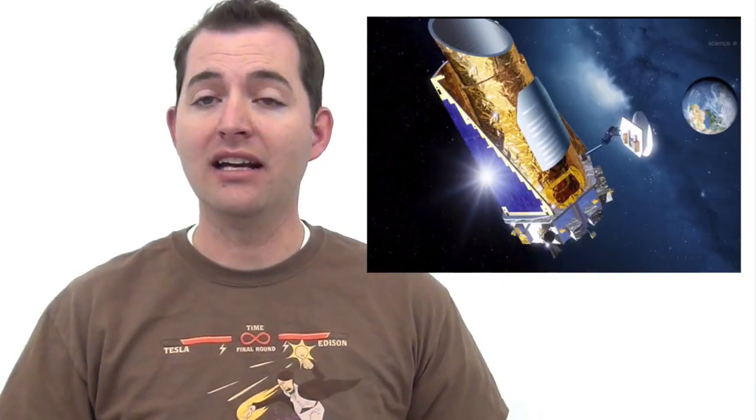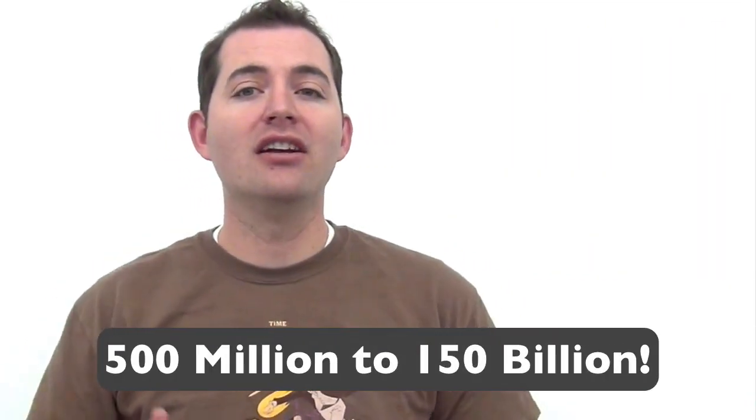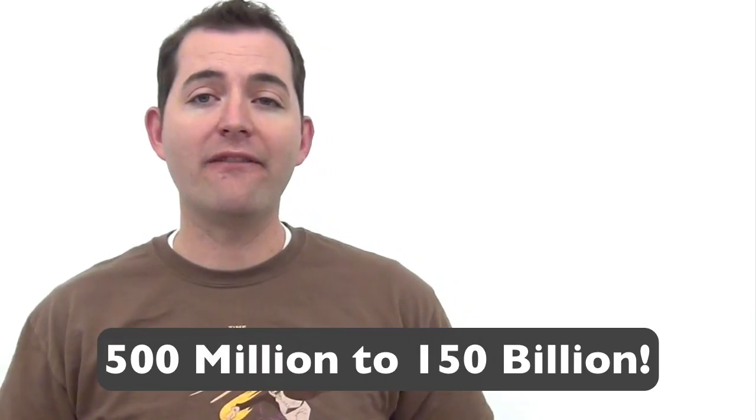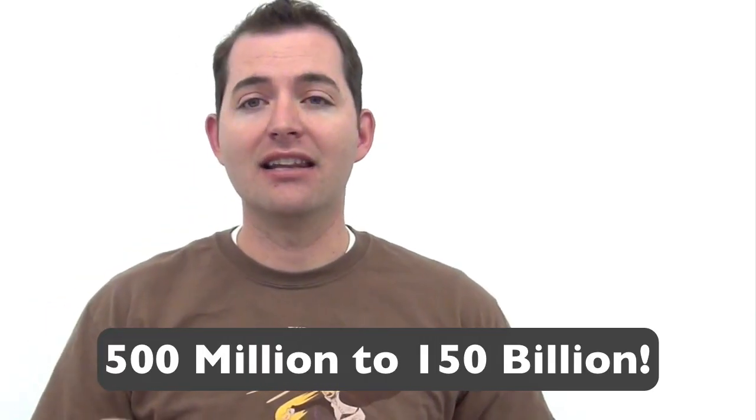Now scientists have done a lot of work looking for planets in habitable zones or Goldilocks zones around stars in our galaxy. In fact, it's estimated that somewhere between 50 to 150 billion different planets in our galaxy likely exist in Goldilocks zones around their stars. And these same 50 to 150 billion planets might hold life.